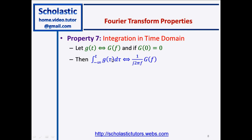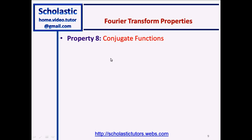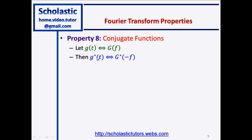Property number eight: conjugate functions. Again, g(t) in the time domain and G(f) in the frequency domain. Then we can write g*(t) in the frequency domain equal to G*(-f), where the star denotes complex conjugate. So taking the complex conjugate in the time domain corresponds to the complex conjugate in the frequency domain evaluated at negative f.